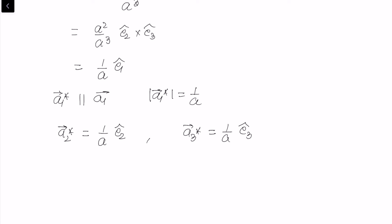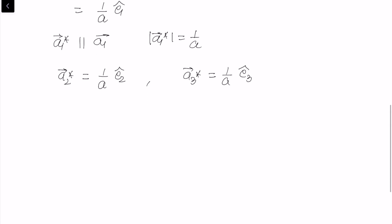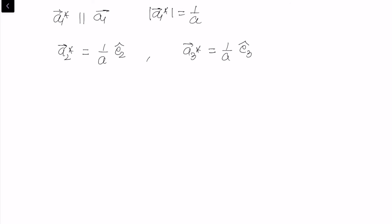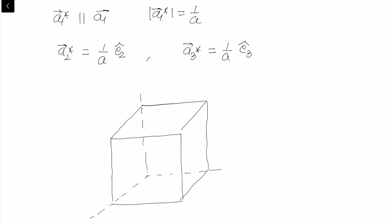That completes our determination of the reciprocal lattice unit cell. Let us draw the direct lattice with lattice parameter a, and alongside it the reciprocal lattice unit cell, which is exactly parallel to the direct lattice but with lattice parameter 1/a.